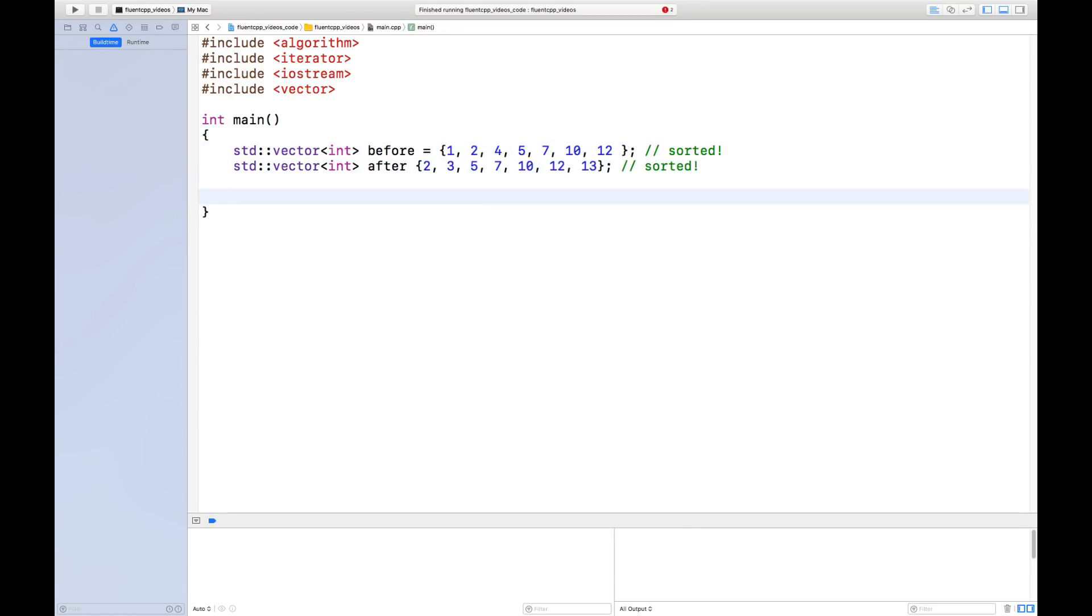So here, I've used a sorted vector. It could have been a set, for example, that's also sorted. Let's say that those two collections represent the state of one collection before and after some values have been added and removed from that collection. Let's try and find out what values have been added and what values have been removed.